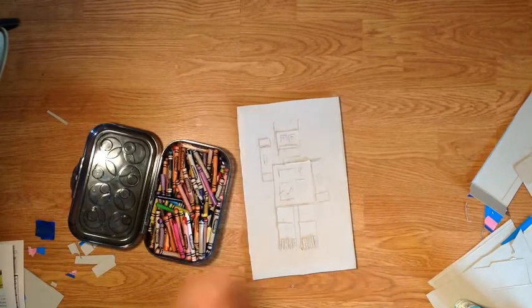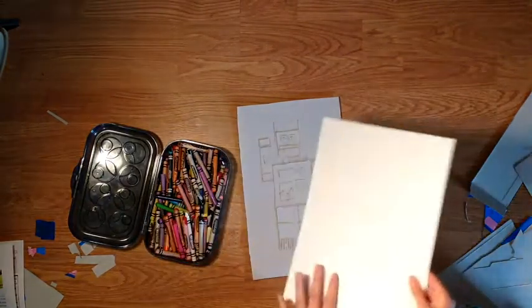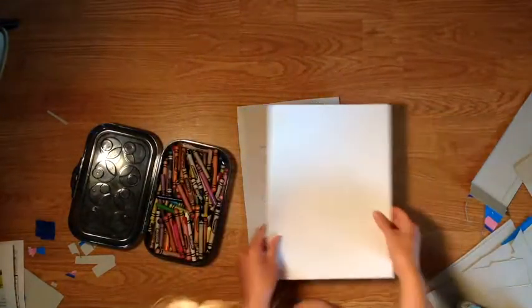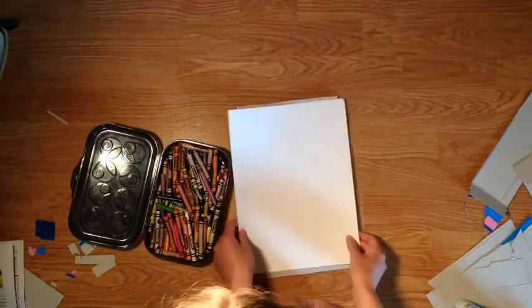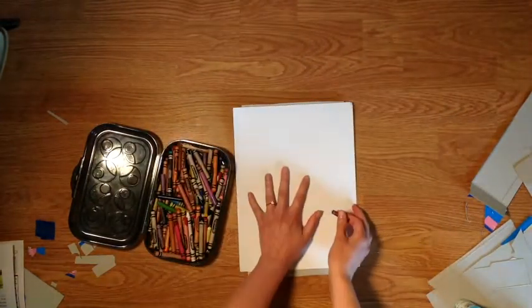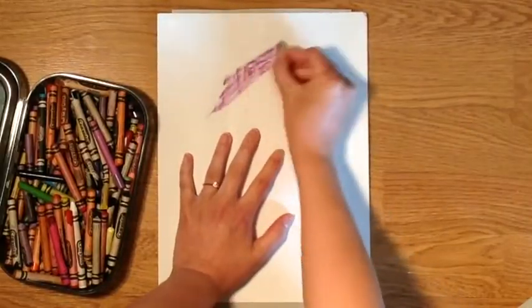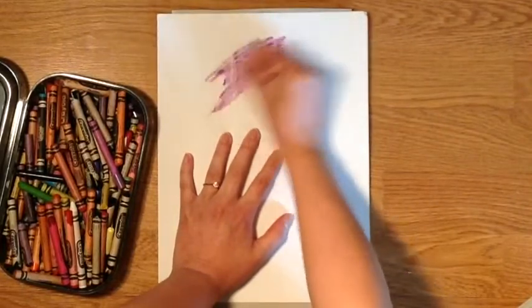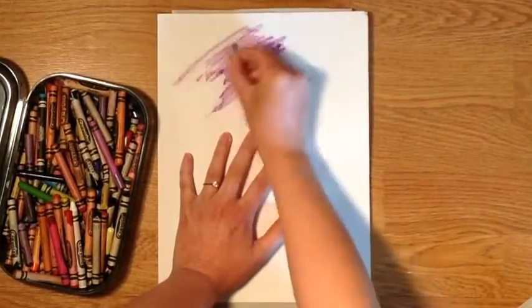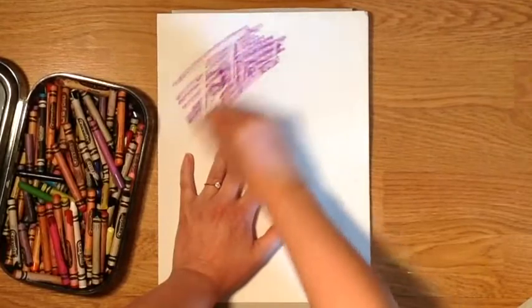Once it's dry you're going to take a piece of white paper and lay it on top of your robot. Place one hand on top of the white paper to hold it in place and then color over top with a crayon. This crayon rubbing is called a collagraph.